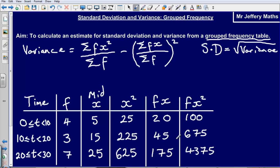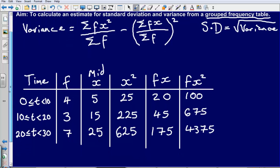So now I've calculated all of this information, all that's left for me to do really is to think about what else I need to do. Well, I need the sum of fx squared divided by the sum of f. So let's calculate these things a little further down.